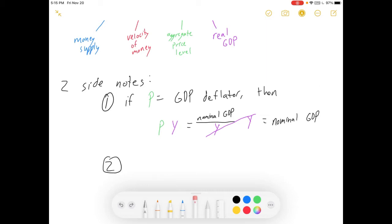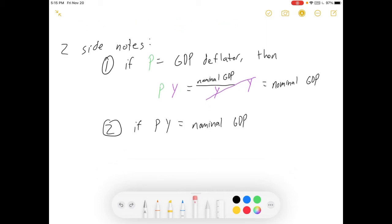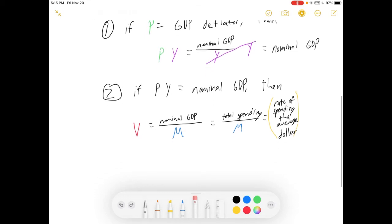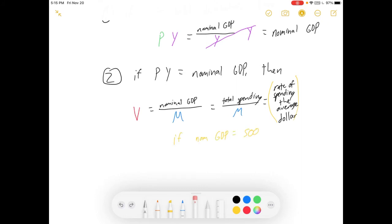So what we have is that the money supply times the velocity of money is equal to nominal GDP. Let's go to the second question for the second little side note. If PY is equal to nominal GDP, then V is equal to nominal GDP divided by M, which is equal to total spending over M, which is the rate of spending of the average dollar.